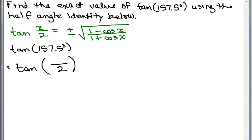We're going to find the exact value of tangent 157.5 degrees using the half angle identity below. There's four different ways to find the tangent of 157.5 using half angle identities, so this is one of those four ways.